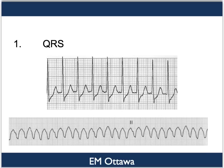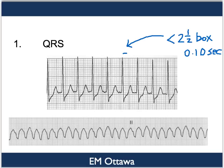First, we will look at how to determine whether the QRS is narrow or wide. A narrow QRS is a QRS complex that measures from the beginning of Q to the end of S that is narrower than 0.1 seconds or 2.5 small boxes. You can see in the top rhythm strip the QRS is narrow, whereas in the bottom rhythm strip you can see there is a wide QRS because the complexes are wider than 0.1 seconds or 2.5 boxes.